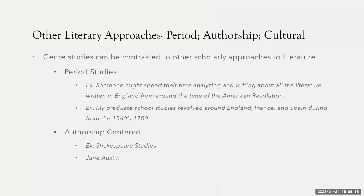Another point of reference might be my own graduate education. When I was doing my PhD, I concentrated on the period between the 1560s and 1700s in a couple of different countries and their literatures. Period studies are where you've narrowed your literary scope to a period of time — it might be short, like all texts published in 1945, or a longer period. Another approach would be an authorship-centered approach.